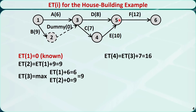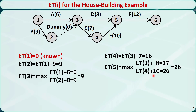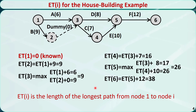For node 5, the early time has two options: the early time of node 3 plus the duration of activity D equals 17, and the early time of node 4 plus the duration of activity E equals 26. We pick the larger value, 26, as the early time for node 5. For node 6, the early time equals the early time of node 5 plus the duration of activity F, which is 38. As a general rule, we can think of the early time of node i as the length of the longest path in the project network from node 1 to node i. For example, from node 1 to node 3, the longest path is 1→2→3 with length 9. From node 1 to node 5, the longest path is 1→2→3→4→5 with length 26.